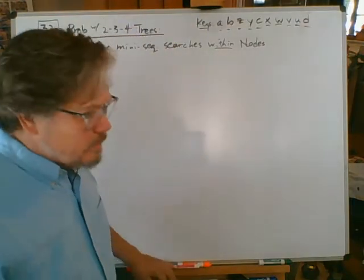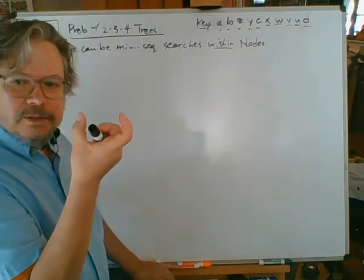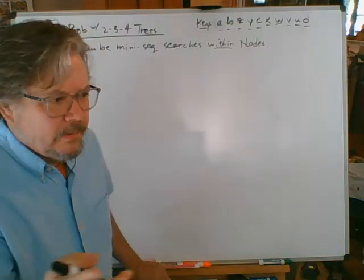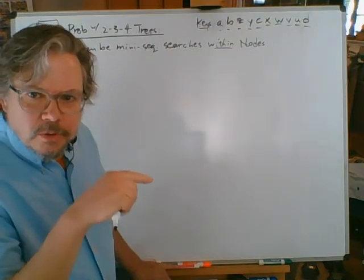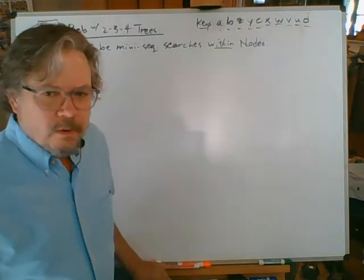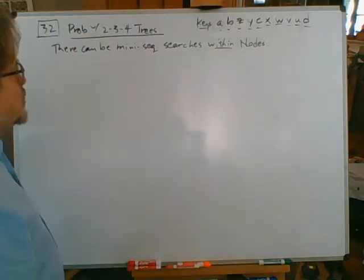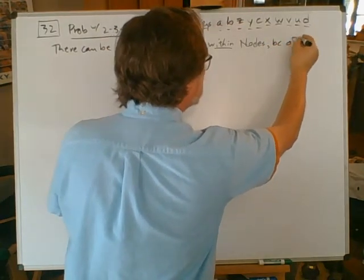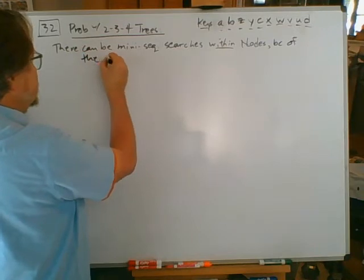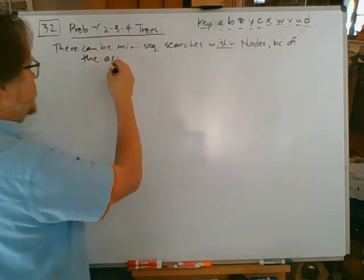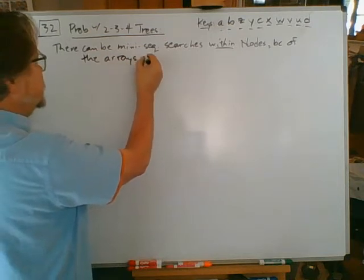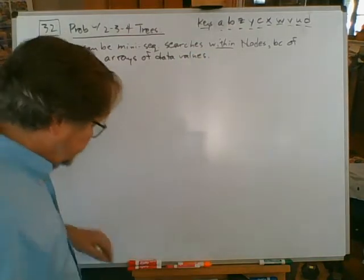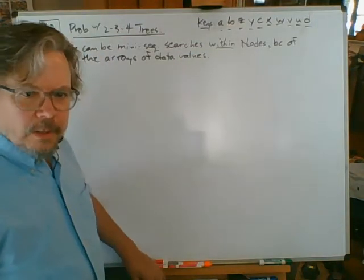Why? Because inside a node we've got a little array, a little array of size three. That shouldn't take very long, except if we have a huge tree that's got lots and lots of data for a database in it, those can add up. Those little mini sequential searches of having to look through the array to find out which direction to go - there can be many sequential searches within nodes because of the arrays of data values. Each node has its own little miniature array.